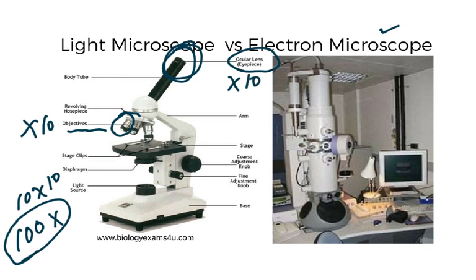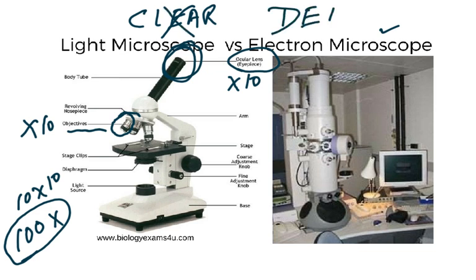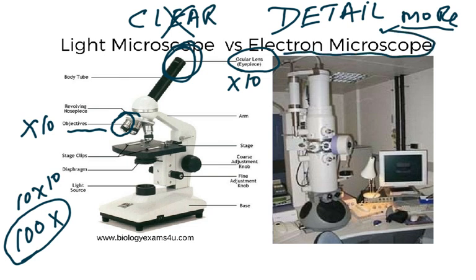A common mistake: do not say the electron microscope produces a 'clear' image — the word 'clear' is incorrect biological English. Instead say you can see more detail, or it has better resolution. Just like a higher-resolution camera phone, more detail means you can see the internal structures of the cell more precisely. Resolution of a light microscope is 200 nanometers — meaning you can distinguish two dots 200 nm apart — while the electron microscope has resolution down to 0.5 nanometers. The image from an electron microscope is always black and white and called an electron micrograph, while the image from a light microscope is called a photomicrograph.